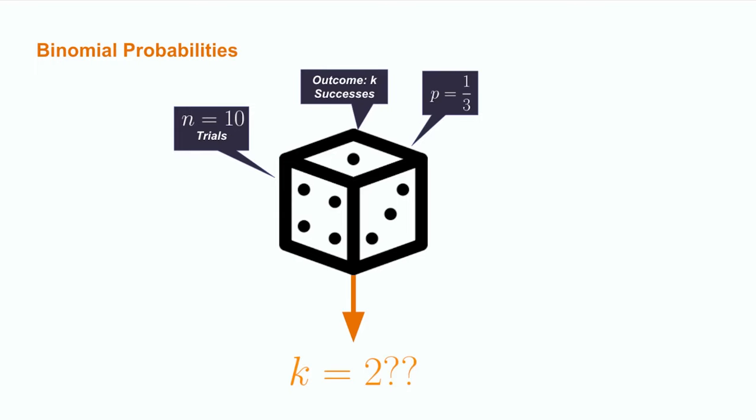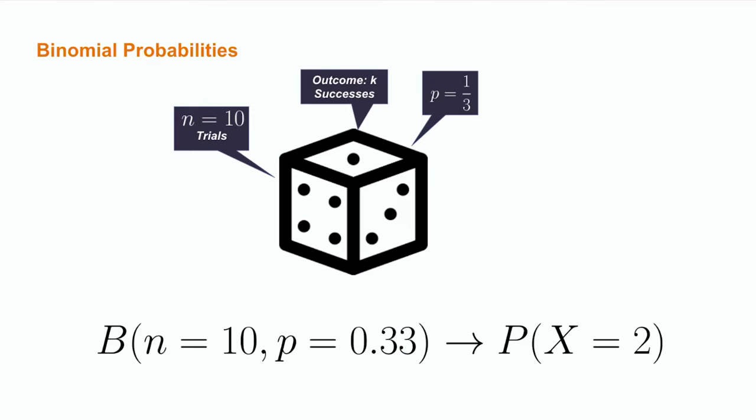Now, if you played this game and you only won two times, that is you had a k of 2, you might be very upset. After all, you might think that you should win just over three times out of 10. Well, in order to see how reasonable this outcome is, we need to use the binomial distribution for a binomial experiment with 10 trials and a 33% chance of success. This can help us calculate the probability that the binomial variable x, the number of games you win, is equal to 2, the number of successes you observed.